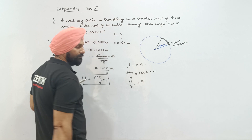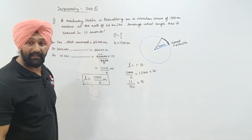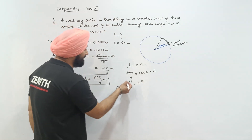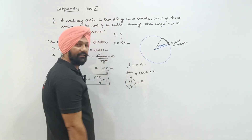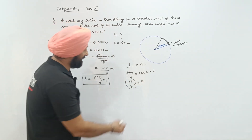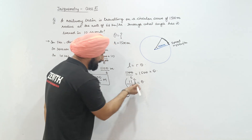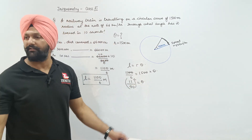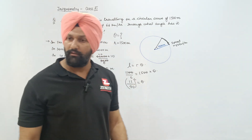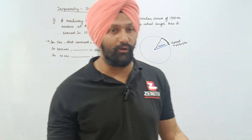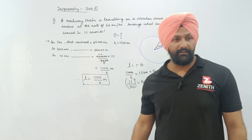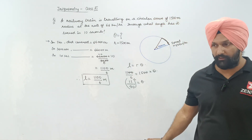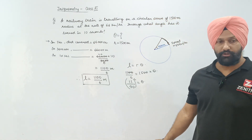So theta equals 11/90 — and that is in radians, not degrees. That is the answer. Is this point clear to all of you?